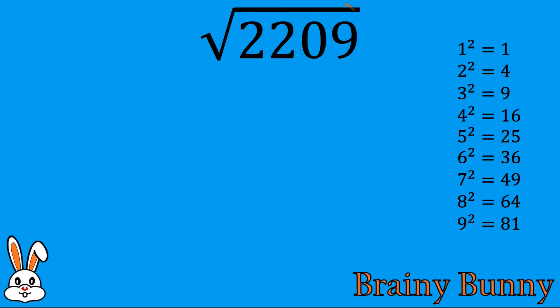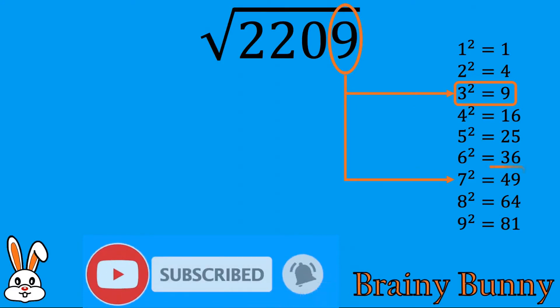We start by considering the last digit of the question, in this case number 9. We can see that 3 squared or 7 squared ends with the number 9. This is the first step of the solution.